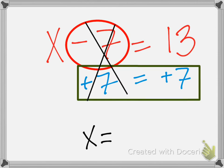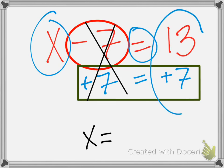Negative 7 plus 7 turns into 0. We are now left with x equals. And then what's the answer? 20. Exactly. This is how we show our work. This is how we isolate our variable.